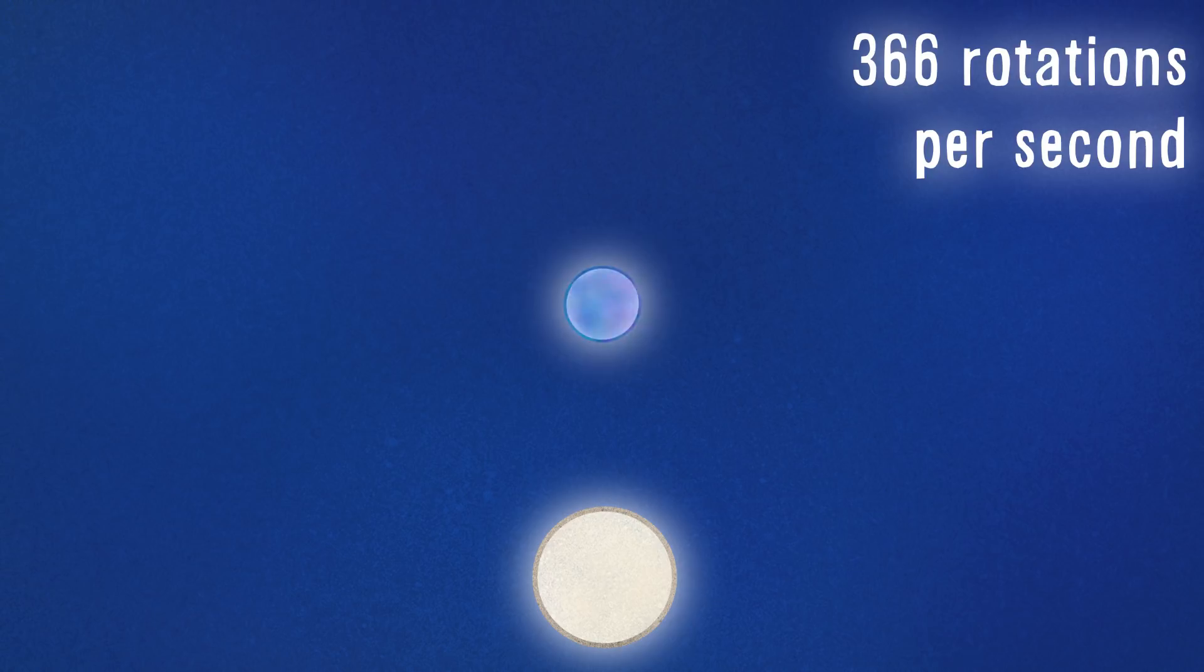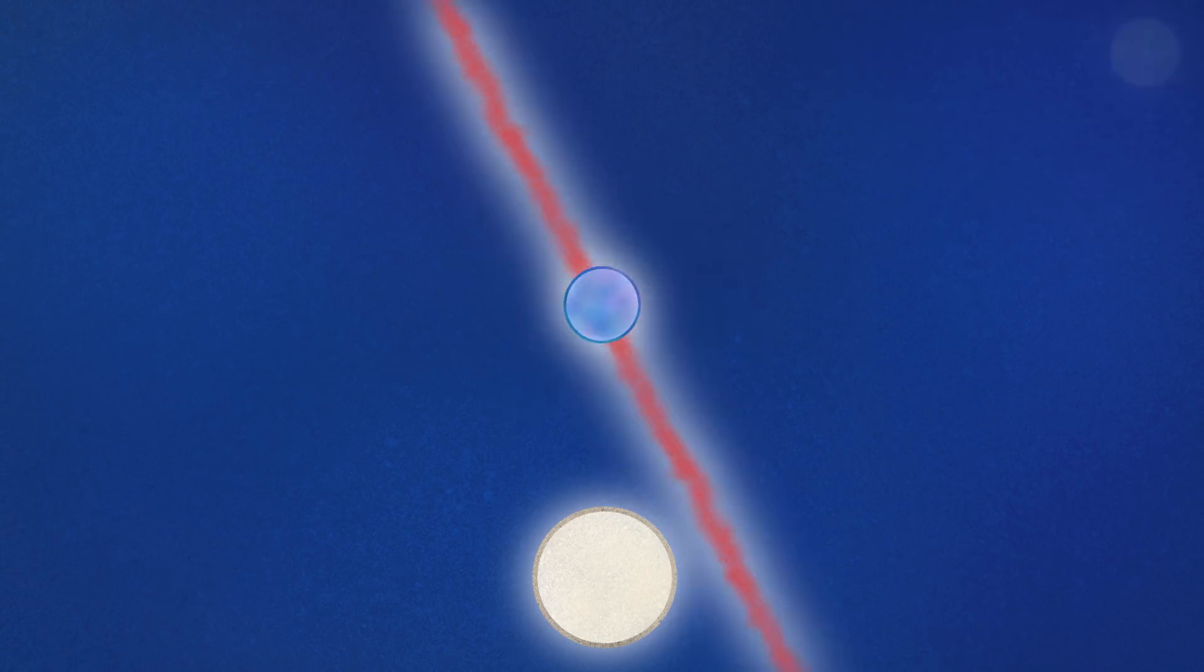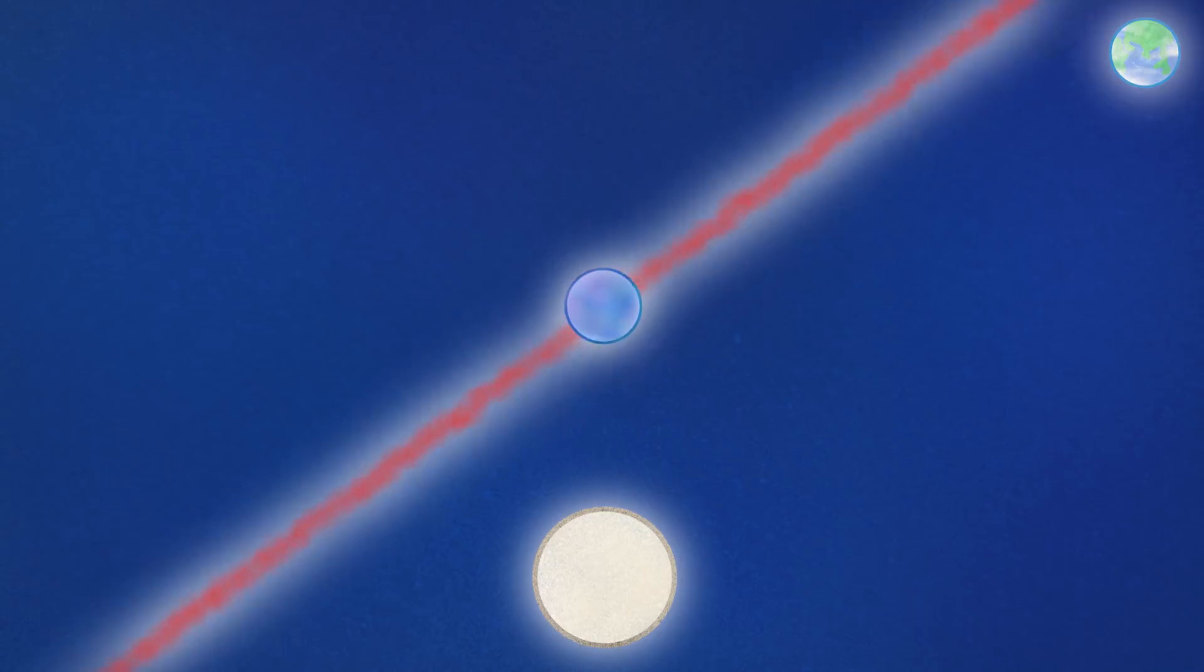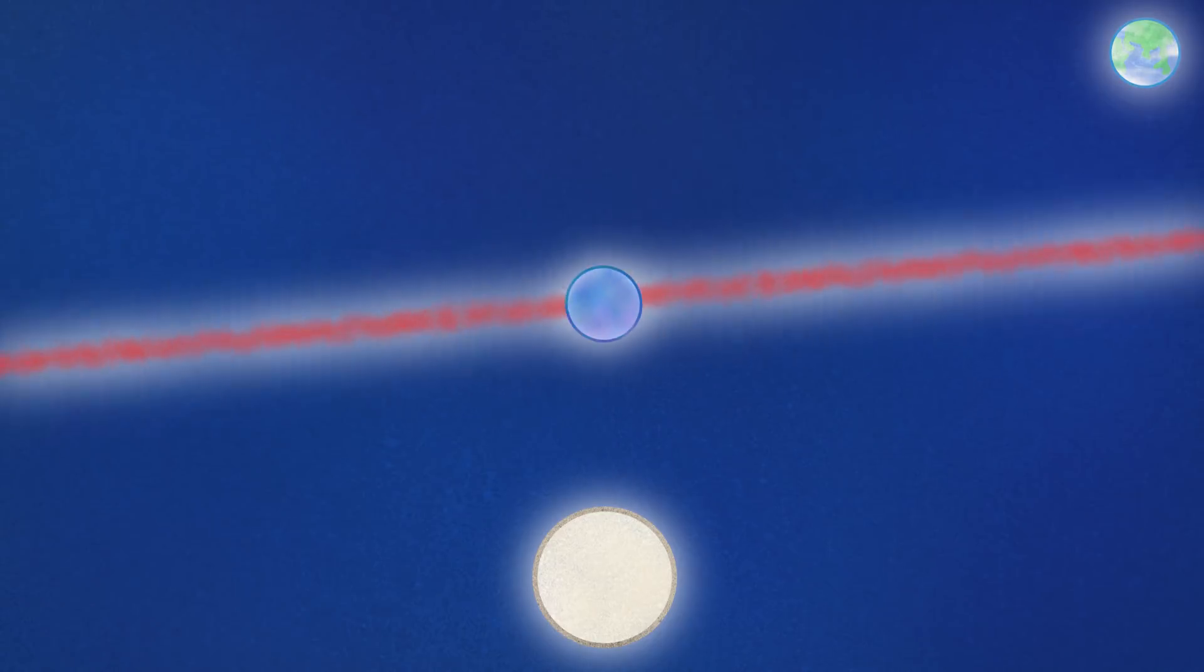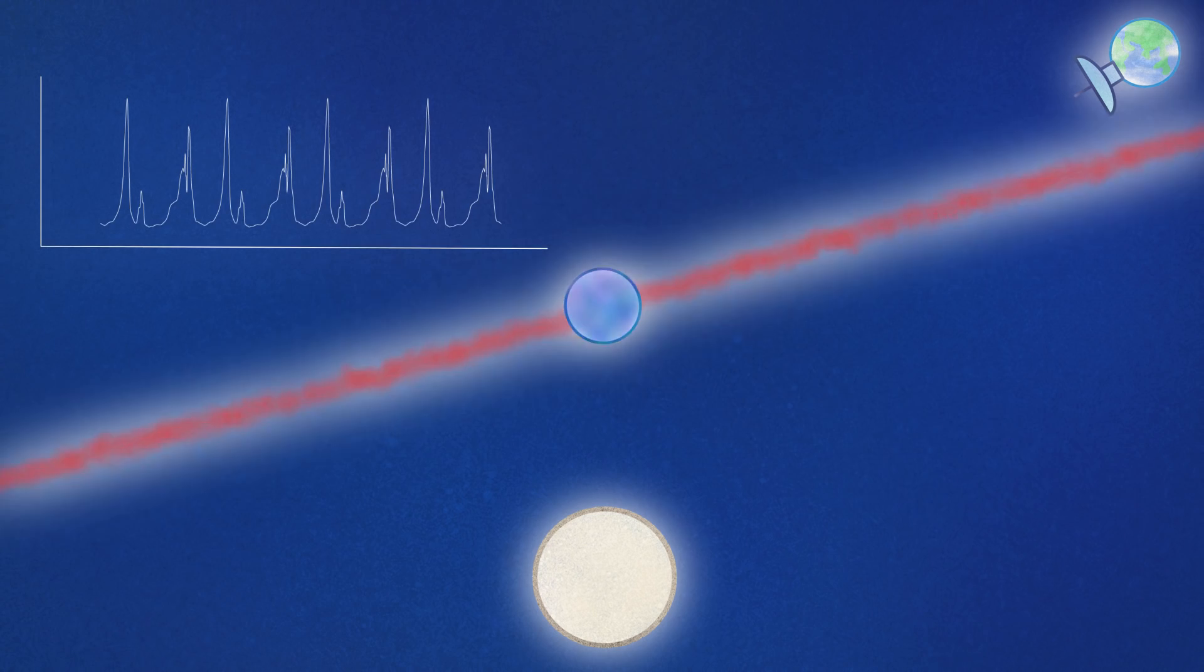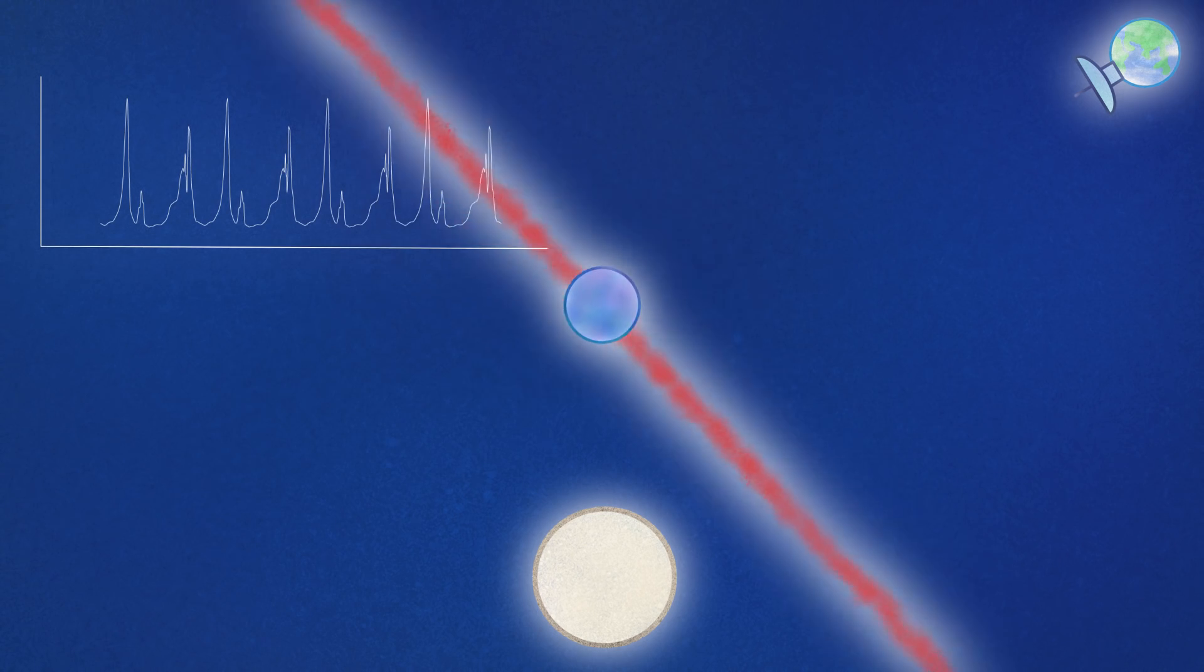It rotates 366 times per second, and beams of radio waves rotate along. They sweep over the Earth at regular intervals like a cosmic lighthouse. We can pick up the radio pulses, which are so fast they sound like a tone, and use them to track the neutron star.